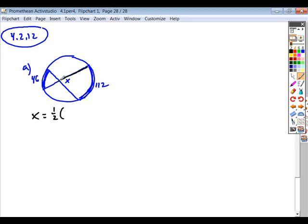So we're looking at the angle itself. That intercepts an arc of 112 and its vertical angle pair. So if we look at the vertical angle, it intercepts an arc of 46 degrees. And so you'll calculate this to get your measure for X.